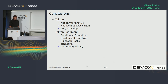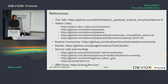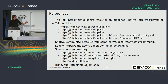On the roadmap for Tekton: conditional execution, proper build results and logs, pluggable tasks, further triggers connected to Knative eventing, and a community task library. Some references and links for Tekton, Knative, Kaniko, and the code used in these demonstrations are available on GitHub.